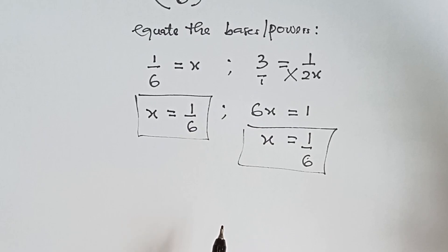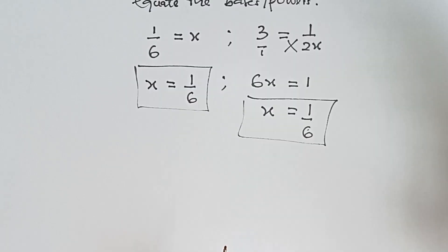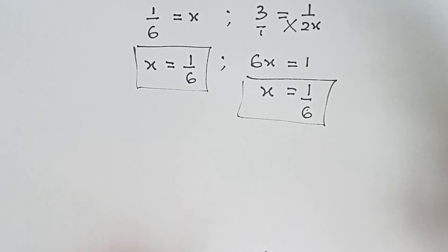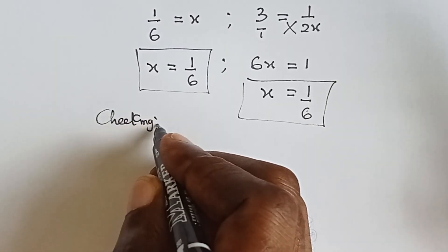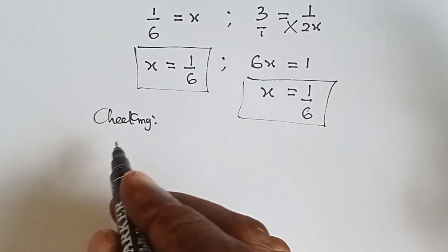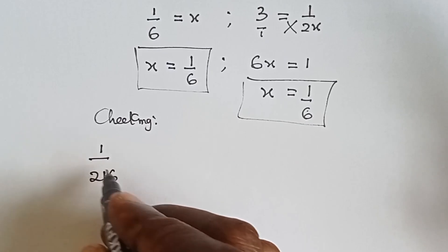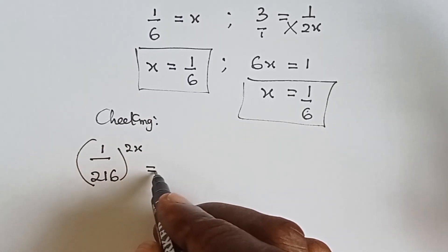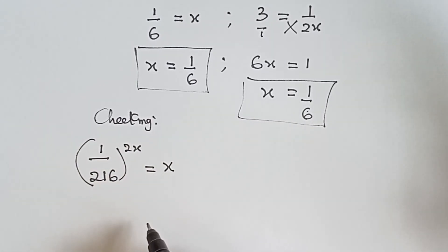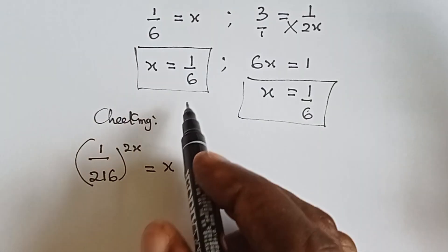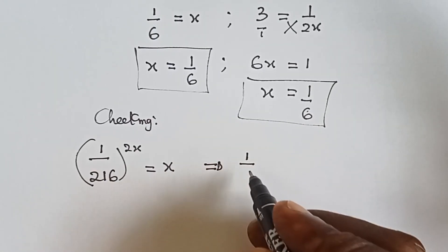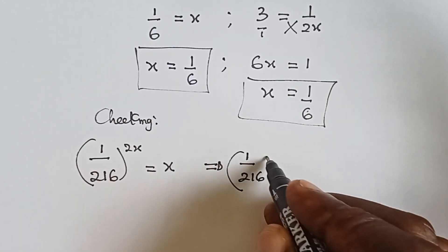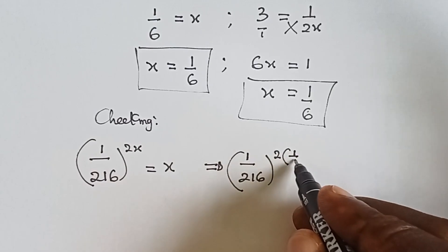That means our answer x equals 1 over 6. Let's quickly check if we are correct. Let's write 1 over 216 raised to the power 2x equals x. Now that we have x equals 1 over 6, let's verify. So we have 1 over 216 raised to the power 2 multiplied by 1 over 6.